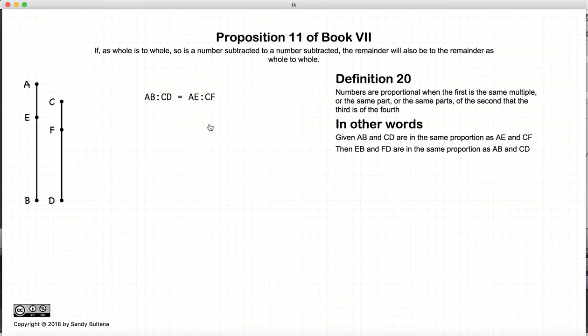So what does this proposition state? This proposition states if we have two wholes, AB and CD, that are in the same proportion as to something that is going to be removed from AB and CD. So in other words, AE and CF, that the remainder,